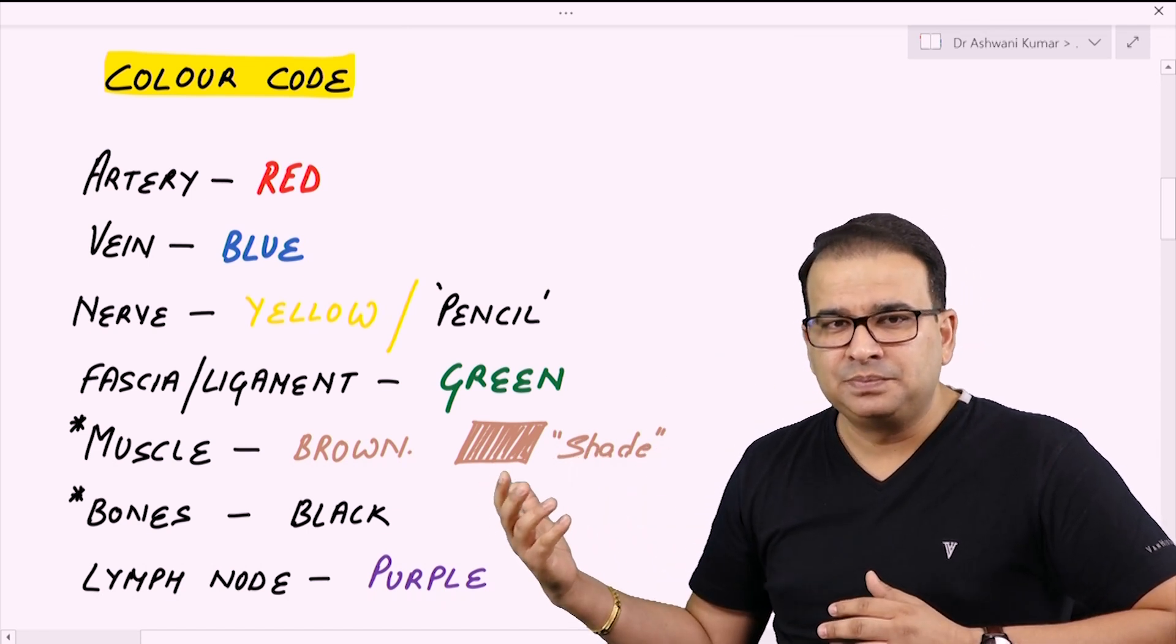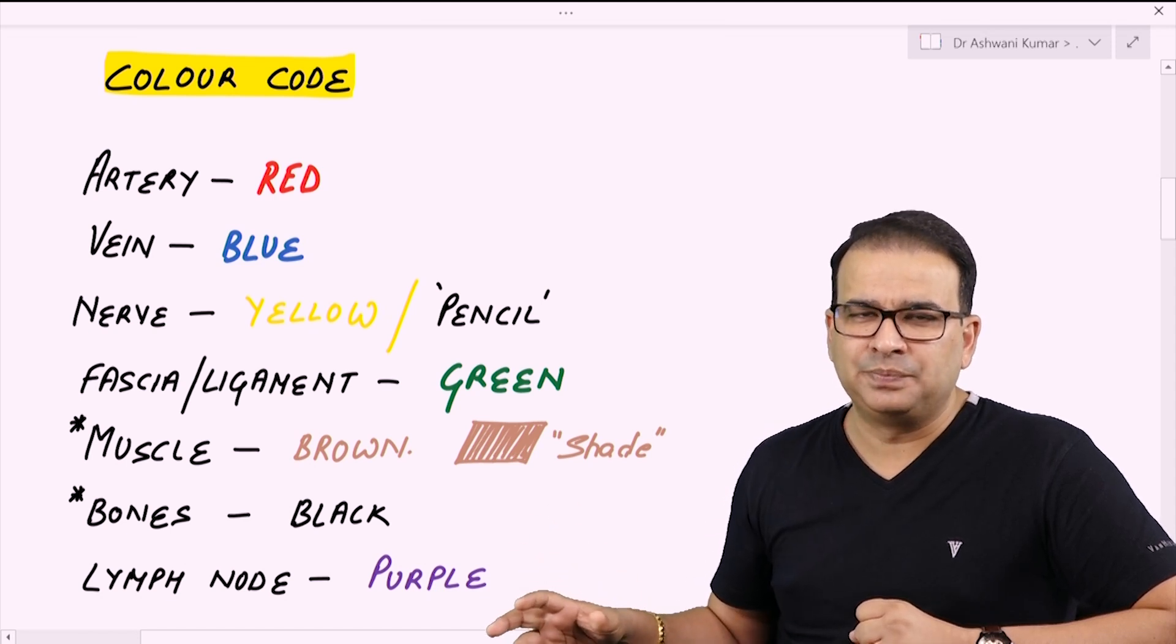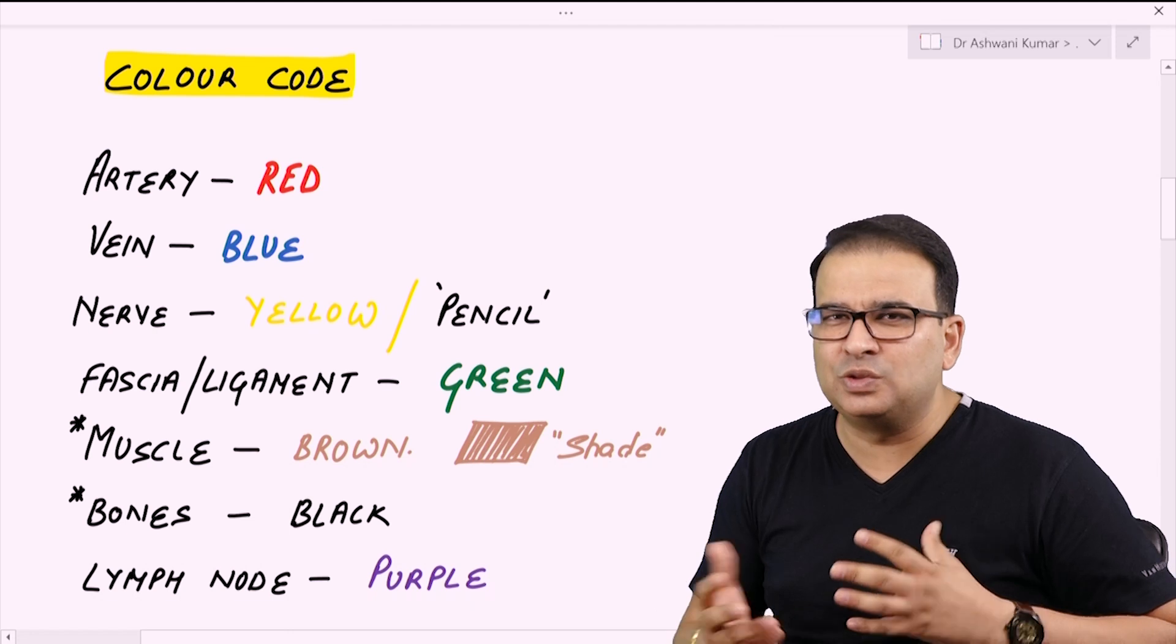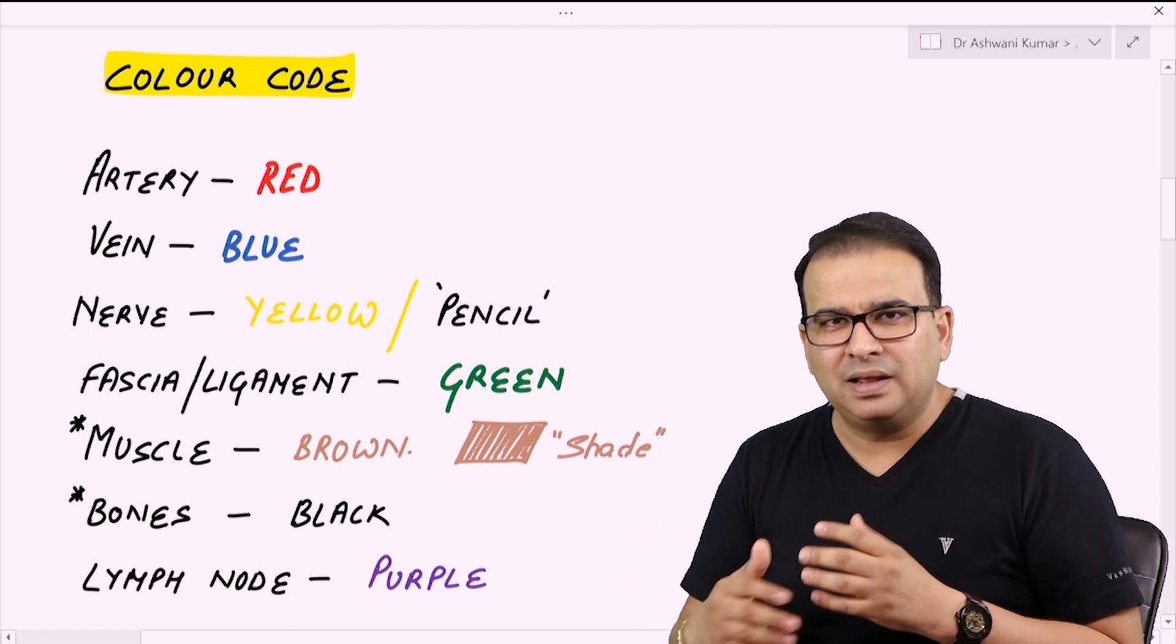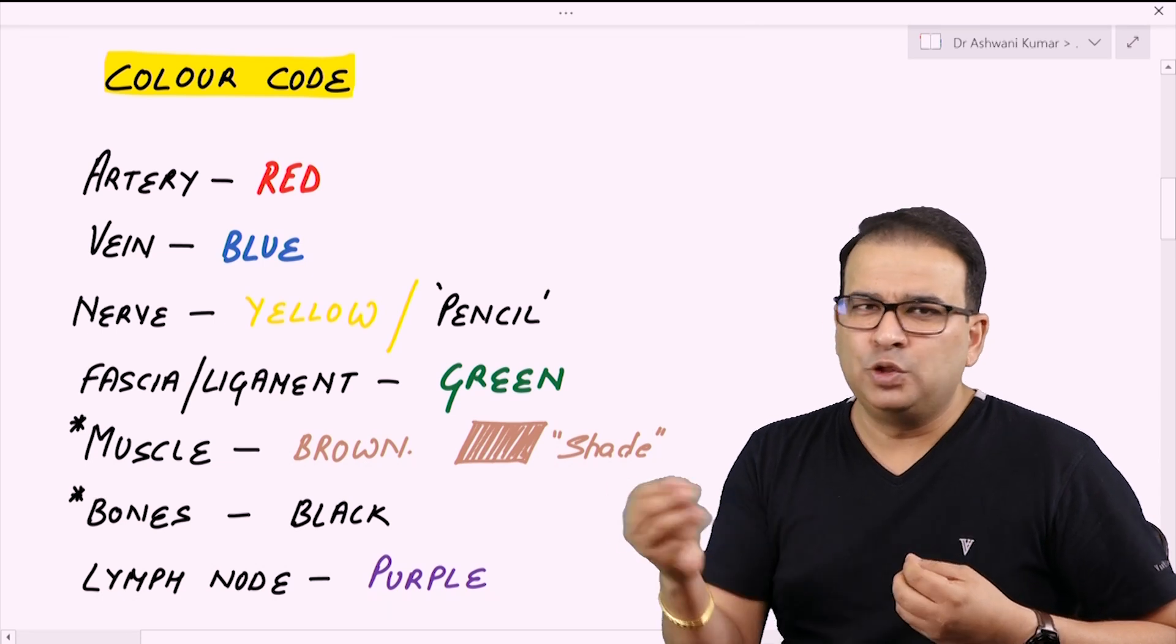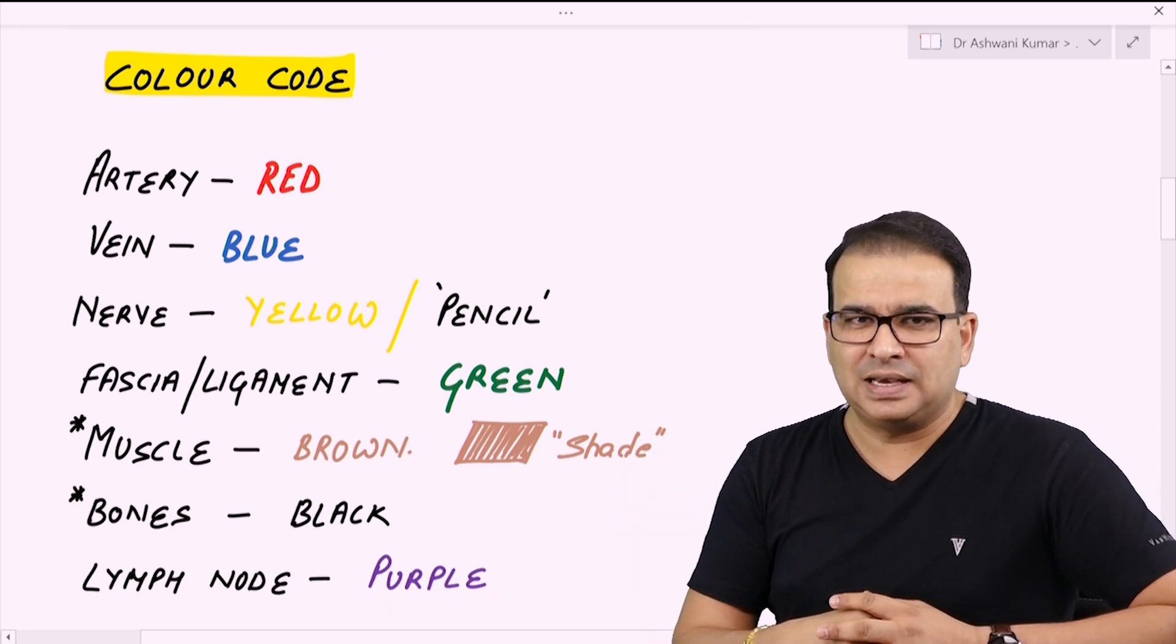Fascia and ligament with green, muscles with brown, bones with black, and lymph nodes with purple color. Apart from these, any other structures in anatomy you can use any color you want. If you are drawing a transfer section of the brain stem and you have to show the different nuclei there, you can use different colors to show the different nuclei and that is very much acceptable.